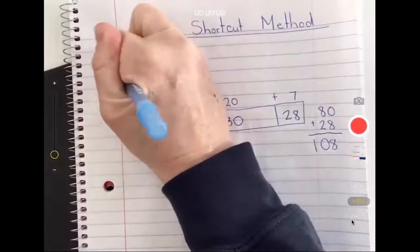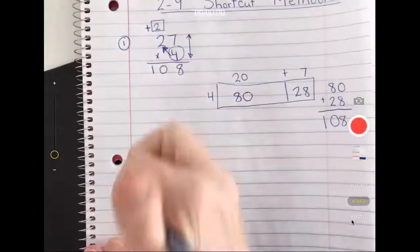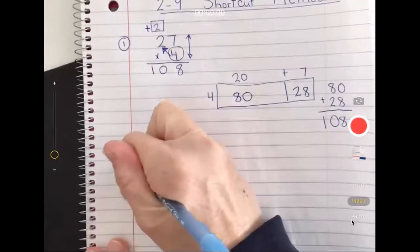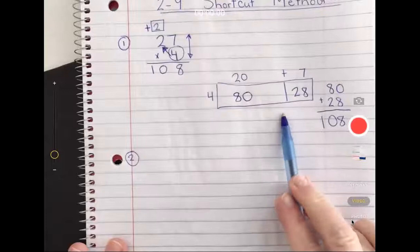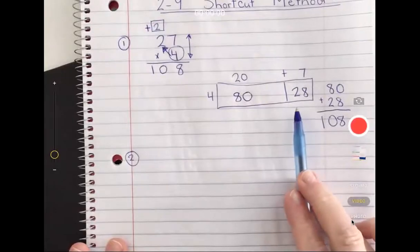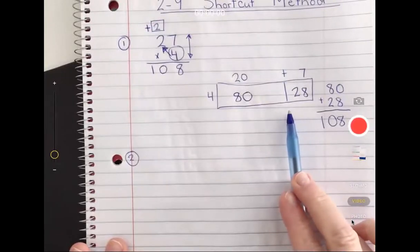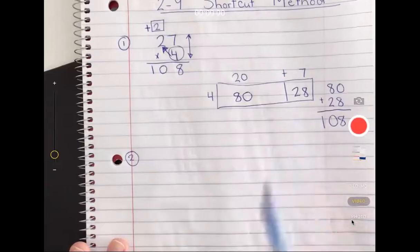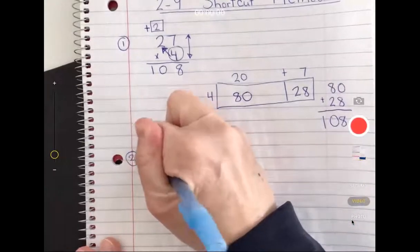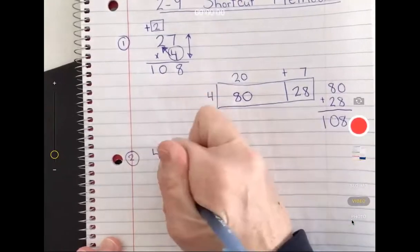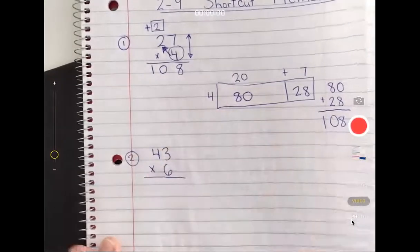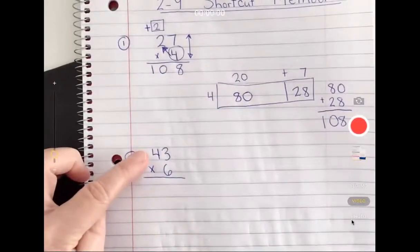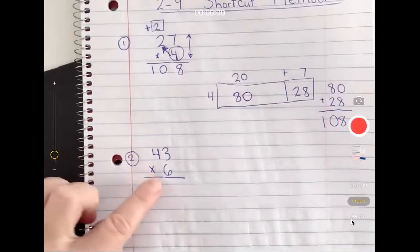Let's try another one. This was number one. We're going to continue with our shortcut. This time I'm not going to draw the area model, but please know you can use that to check yourself if you like. Here we go, this time we've got 43 times six.